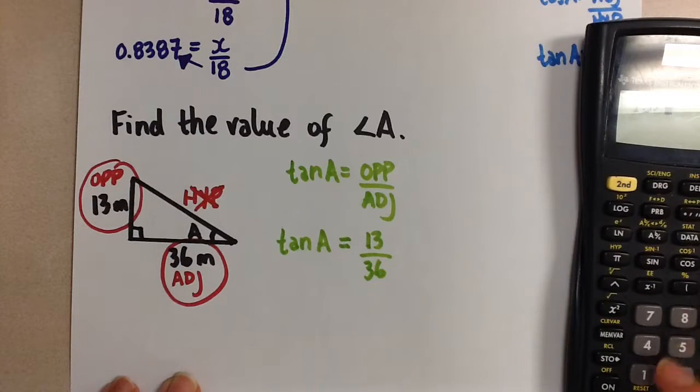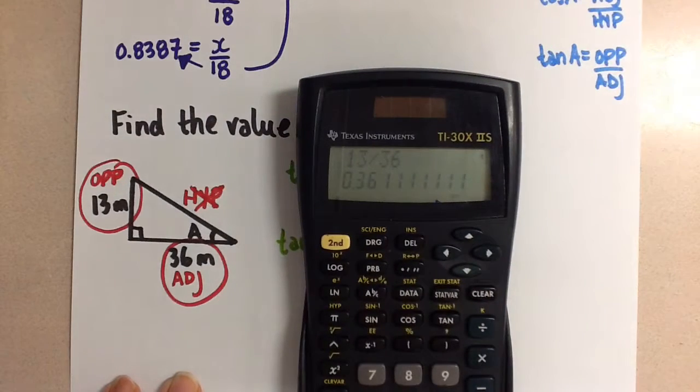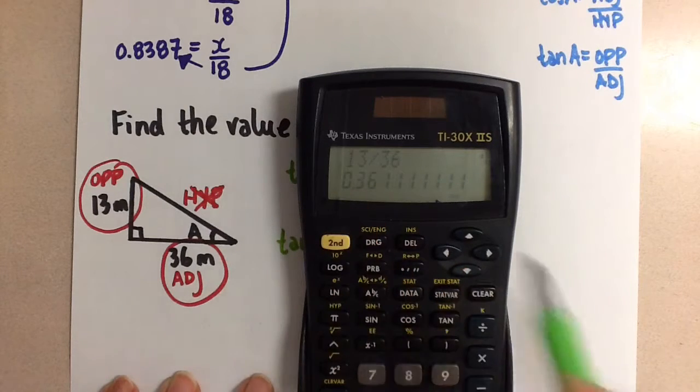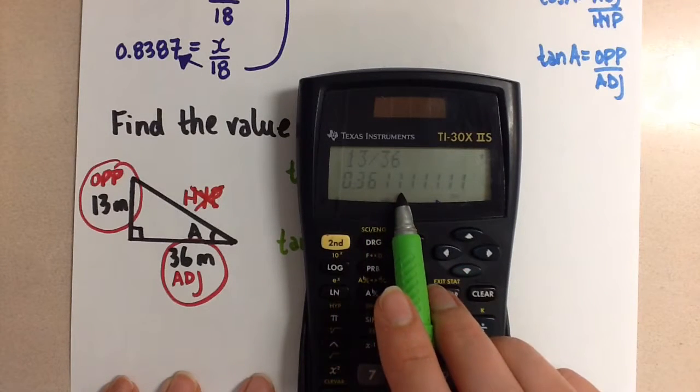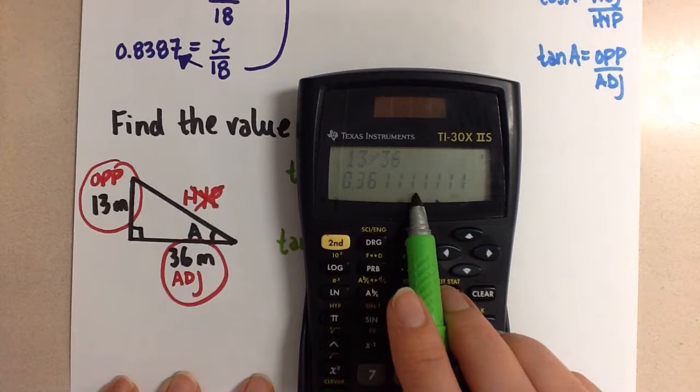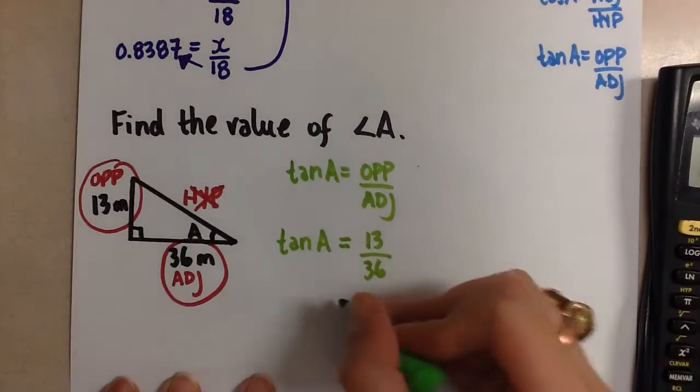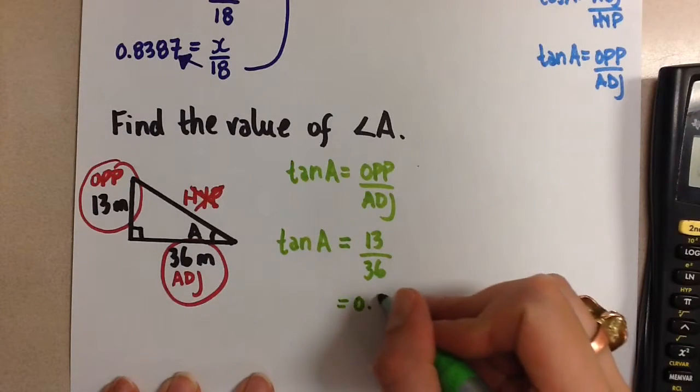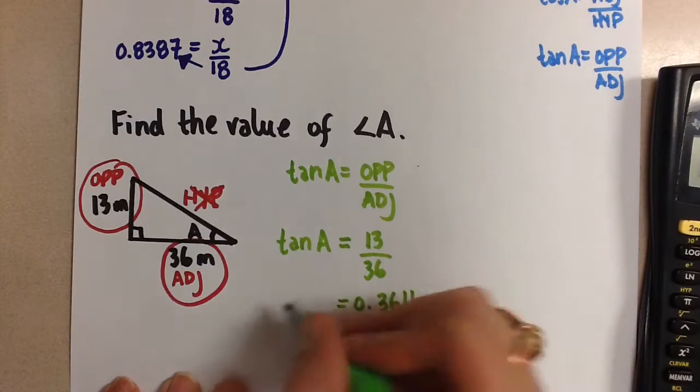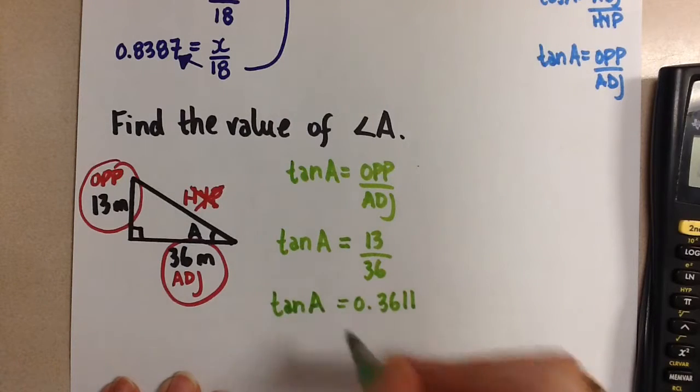So we'll punch in 13 divided by 36, and we get this long decimal again. So when we're working in the problem, I want you to use four decimal places so that we can round two decimal places with correct accuracy at the end. This means that we're going to round this one, and the one next to it is a one. So that one stays the same. So on the right hand side we have 0.3611, and on the left hand side we still have tangent A.